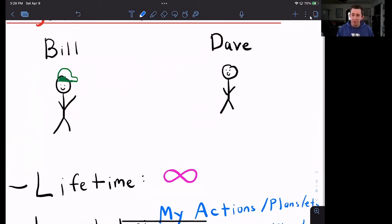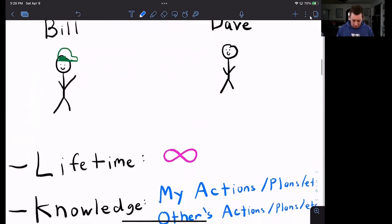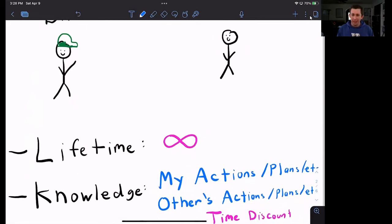What do Bill and Dave know? Let's think about it from Bill's perspective. Bill knows Bill's own actions, his plans, everything that he thinks, but he also knows everything about Dave. So he knows what Dave's actions are, what Dave's plans are, and even knows what Dave wants to do.